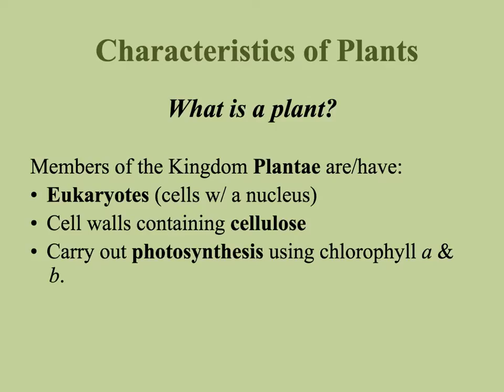The first thing we're going to talk about is what is a plant. Plants, just like animals, have certain characteristics that put them into the kingdom Plantae. One of those characteristics is that they're eukaryotic, so they're in what is known as the domain Eukarya. Just like animals, plants have cells that have a nucleus. They also have cells that have membrane-bound organelles. The cell walls in a plant, the very outside of the cell, contain a substance called cellulose.